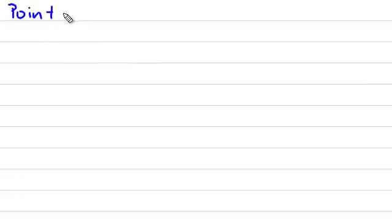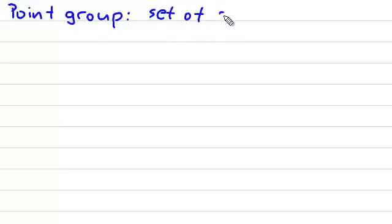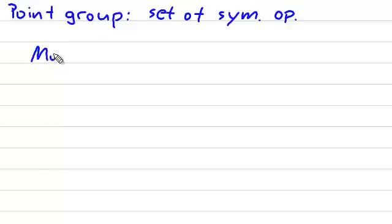Now that we are familiar with symmetry operations, we can actually define point groups of molecules. A point group of a molecule is nothing but a set of symmetry operations which you can apply to this molecule, and which would bring the compound to superposition on itself. Now let me show you how to define these point groups. Let's say we have a molecule and we want to figure out what the point group of this particular molecule is. In order to figure that out, we have to answer a couple of questions.